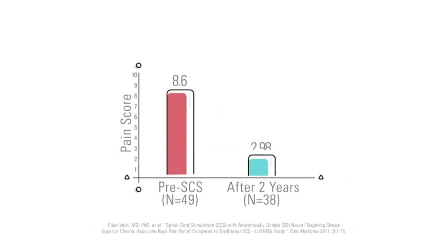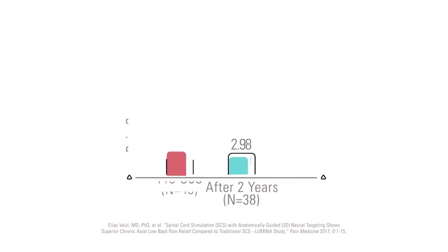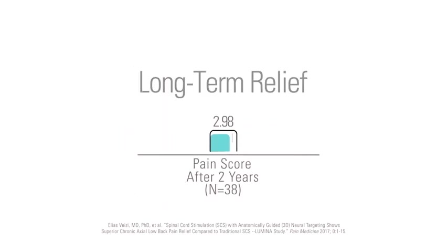In another study, patients with severe back pain reported an average drop in pain score of nearly six points, even two years after getting their Boston Scientific SCS system.